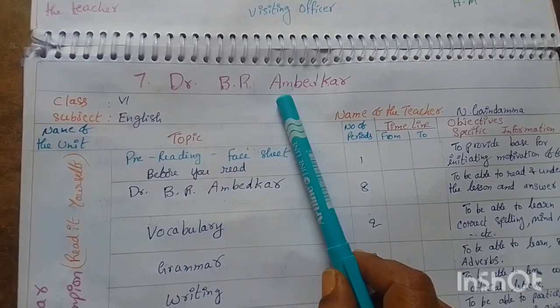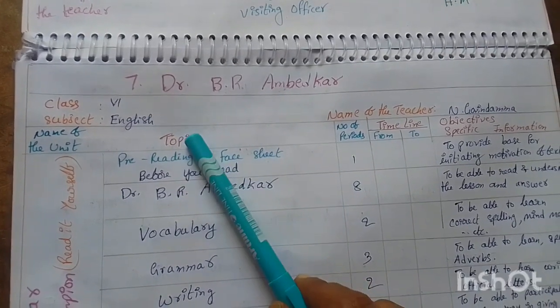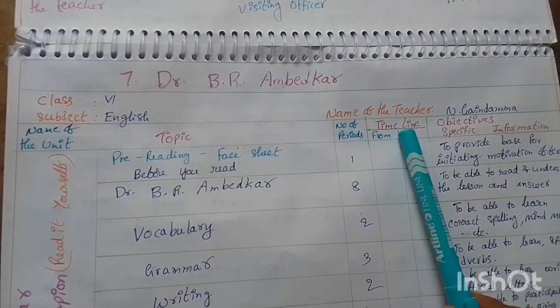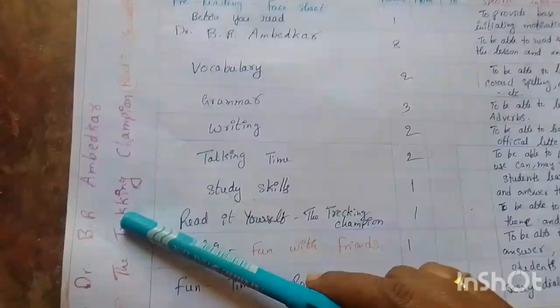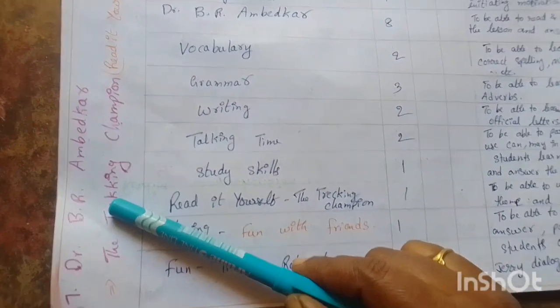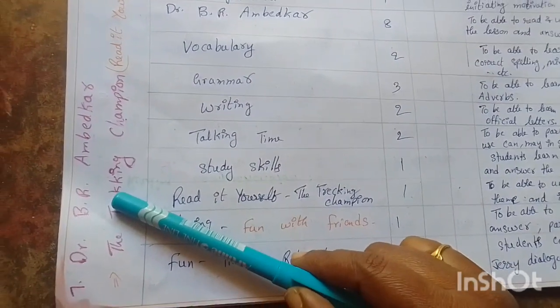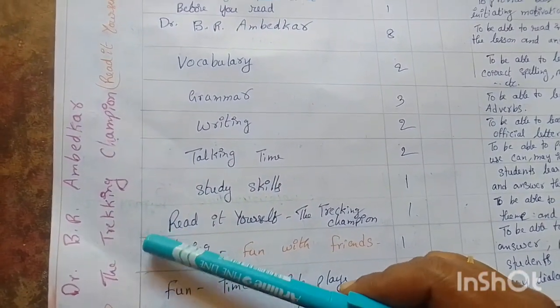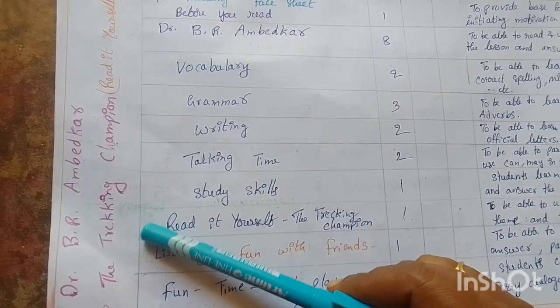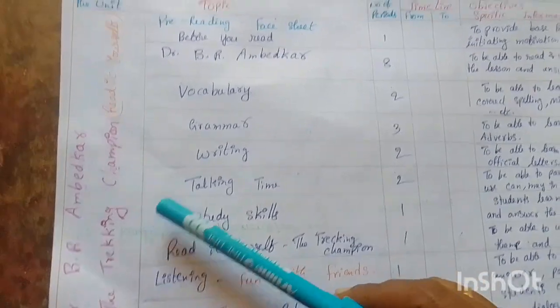Here we write the title, class, subject, name of the teacher, and name of the unit. We write the 7th lesson name, Dr. B.R. Ambedkar, and we have the 'Read It Yourself' part, The Trekking Champion.